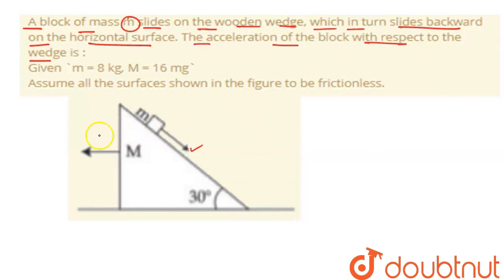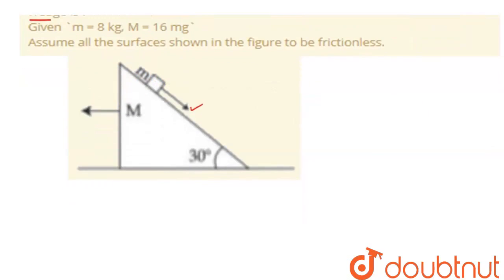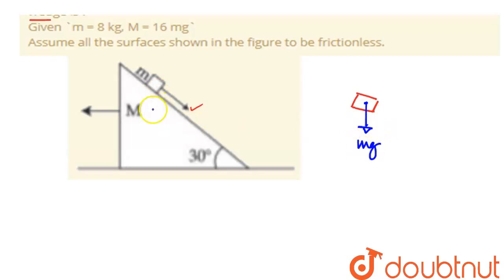So in this wedge, we are trying to find small n. The wedge allows the block to slide. We will draw the free body diagram for the block. Here we have Mg, and this is the angle theta which has been given.